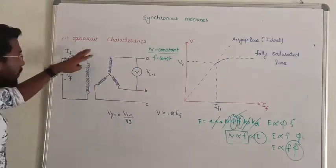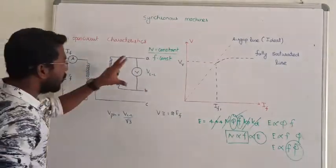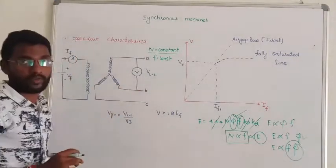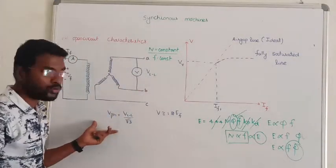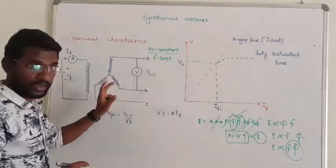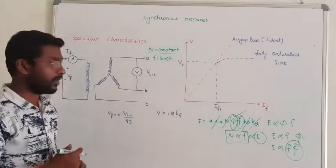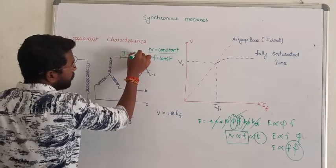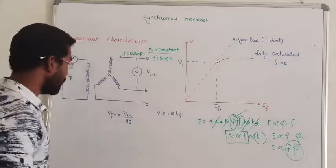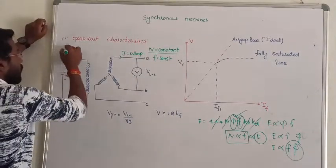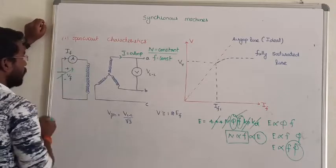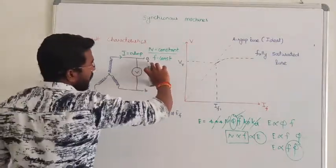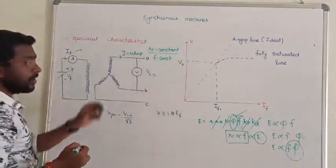In open circuit with speed constant, we measure the voltage between terminals — that is, line-to-line voltage. Since the stator is star connected, we can divide to get phase voltage. In open circuit, the current is going to be zero. We are going to vary the field current by varying the field voltage, and measure the terminal voltage for each value of field current.